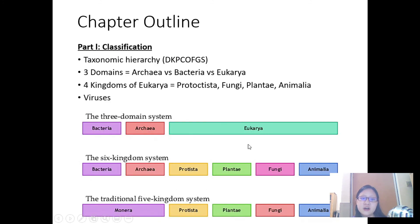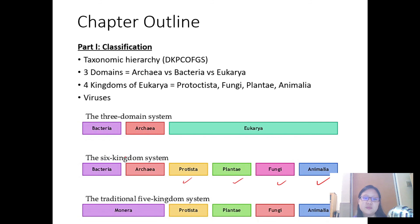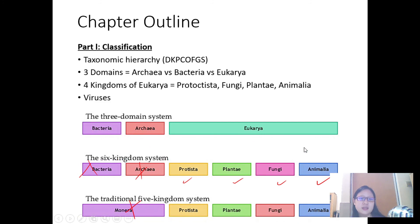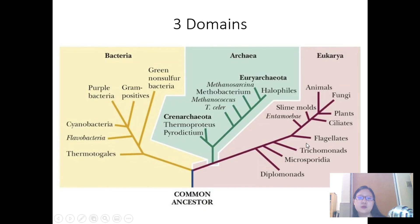The three domains are Bacteria, Archaea, and Eukarya. We will then look at the four kingdoms of Eukarya: Protoctista, Fungi, Plantae, and Animalia. For Bacteria and Archaea, we don't go further than the domain level.